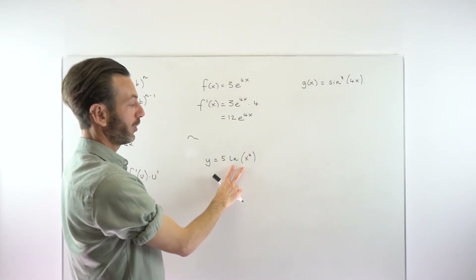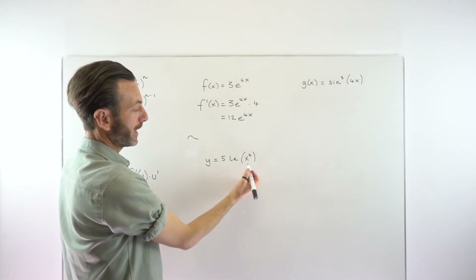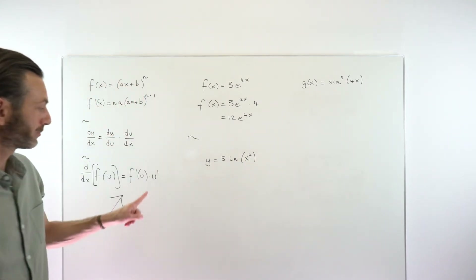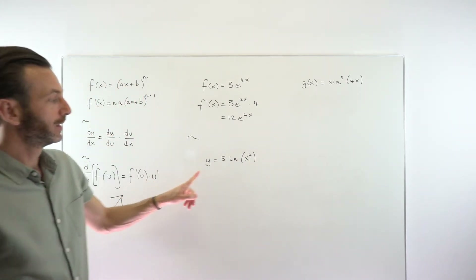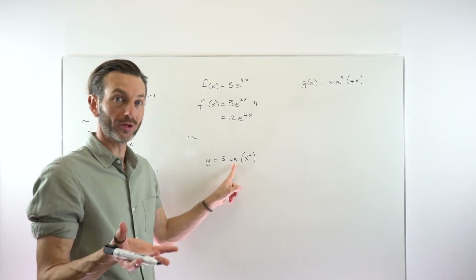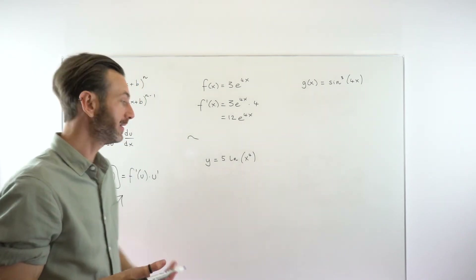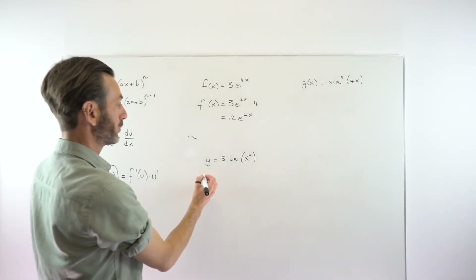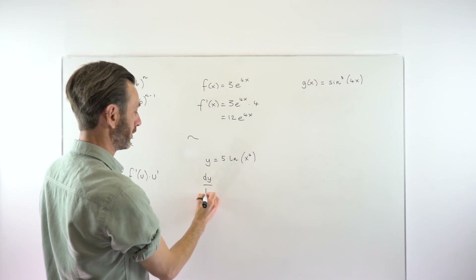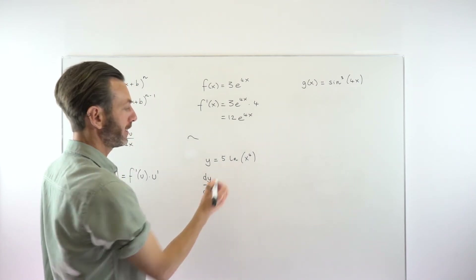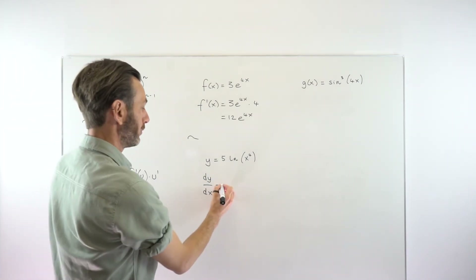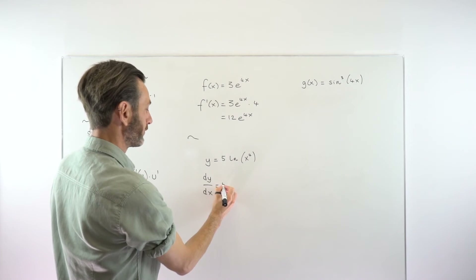Now the natural log function. The internal function here is x to the 4 — that's playing the role of the u part. The overall function is a natural log — log to base e, shortened as ln. We can go straight to our derivative using dy/dx. The 5 is just a constant, so we'll keep that in front.